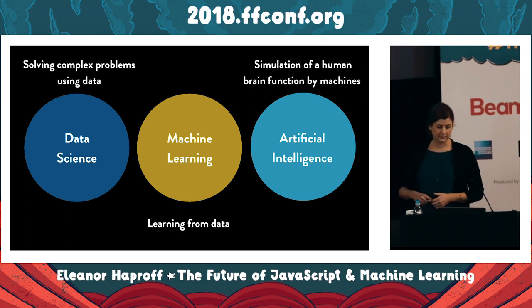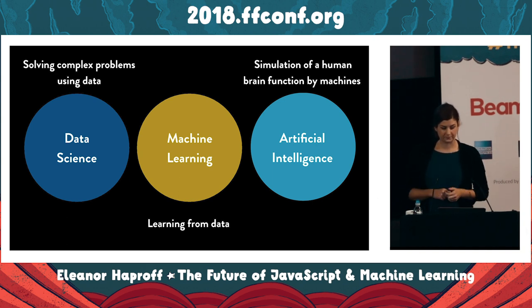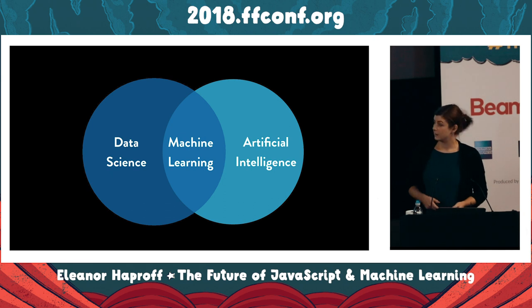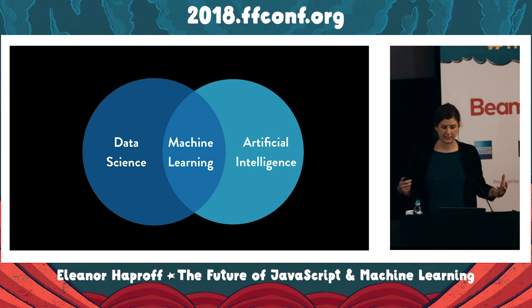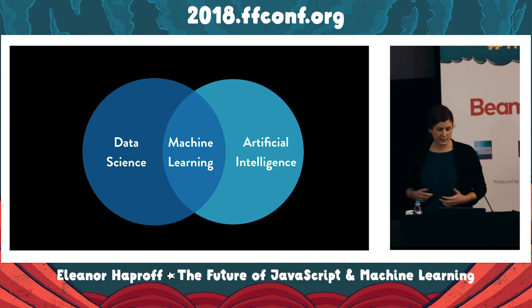Machine learning involves looking at data and finding insights without specifically being told what to look for. This is different to traditional computer algorithms because it specifically involves learning. It's generally accepted that a subfield of both data science and AI is machine learning. Machine learning itself has three main subfields: supervised, unsupervised, and reinforcement learning.